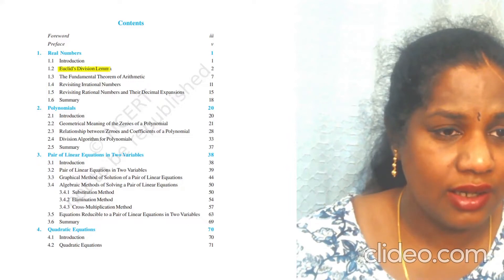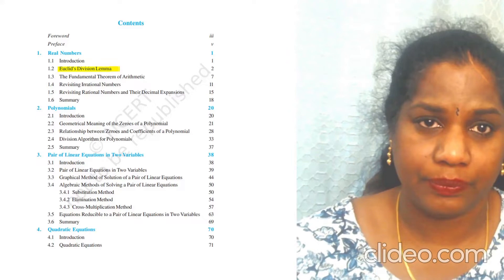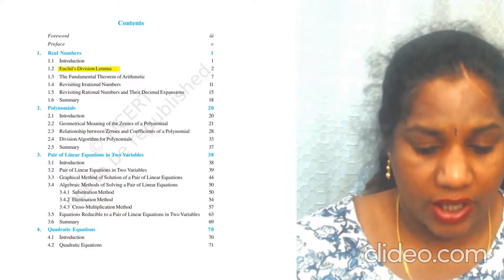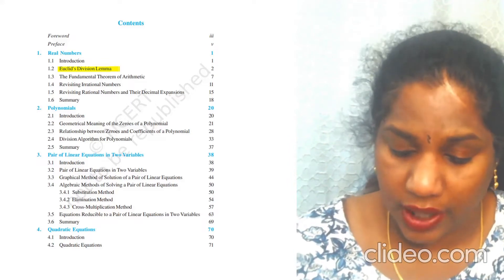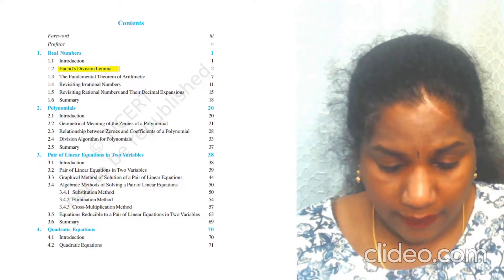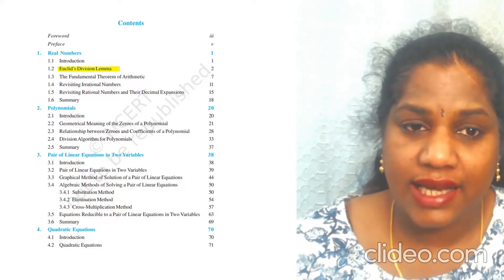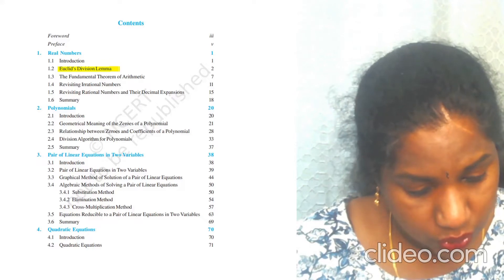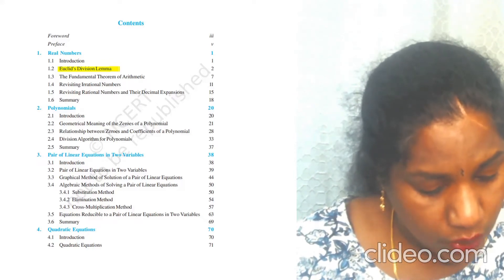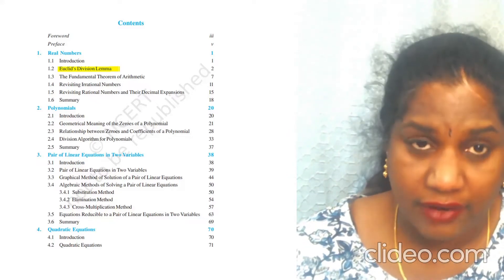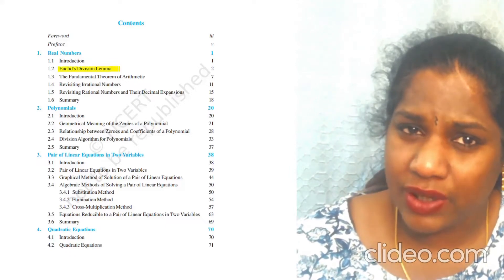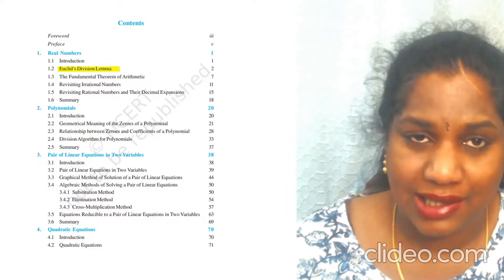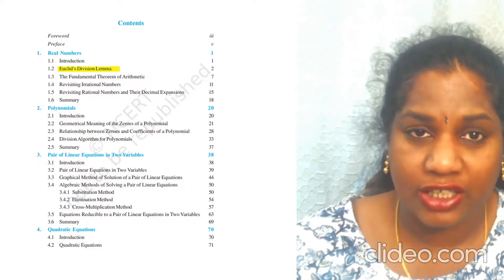Euclid's Lemma and the division algorithm have been totally removed. So Exercise 1.1 on page 7 does not need to be done, and Examples 2 and 3 on page 6 are also removed. However, I would still request you to do Question 3 from Exercise 1.1, because it is based on HCF — not Euclid's Lemma — so please make sure you do that question.